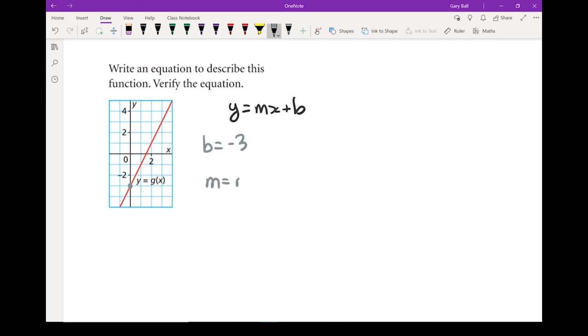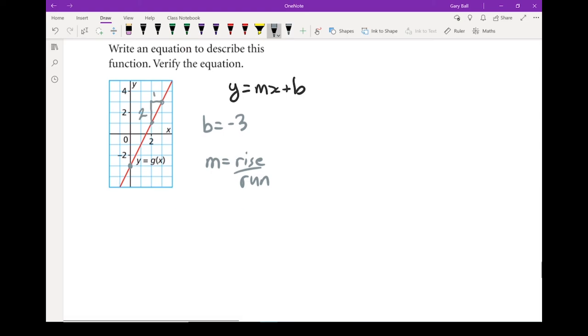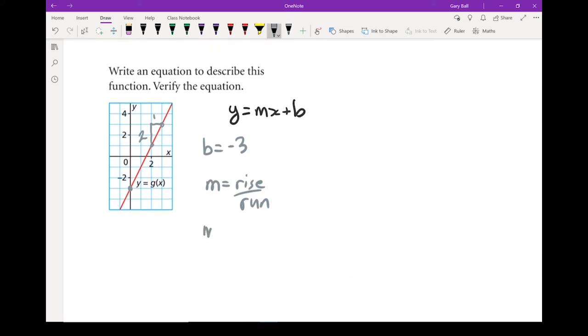m, which is going to be rise over run. Find two spots that it hits perfectly. That one and that one, hits the grid perfectly. Got a rise of 2, run of 1. 2 and 1. In this case, m equals 2 over 1.